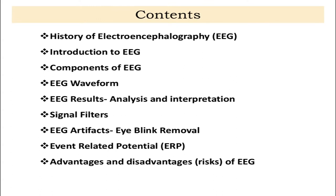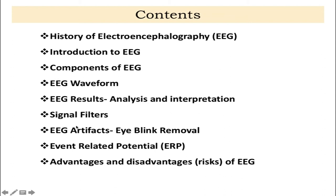In today's lecture we will talk about the history of electroencephalography or EEG, give an introduction to EEG analysis, and discuss various components of EEG analysis. Then we will cover the EEG waveform, EEG results, analysis and interpretation, signal filters used in EEGs, how to use filters for artifacts like eye blink removal, how to use event related potential information against external stimuli, and finally the advantages, disadvantages and risks of EEG.